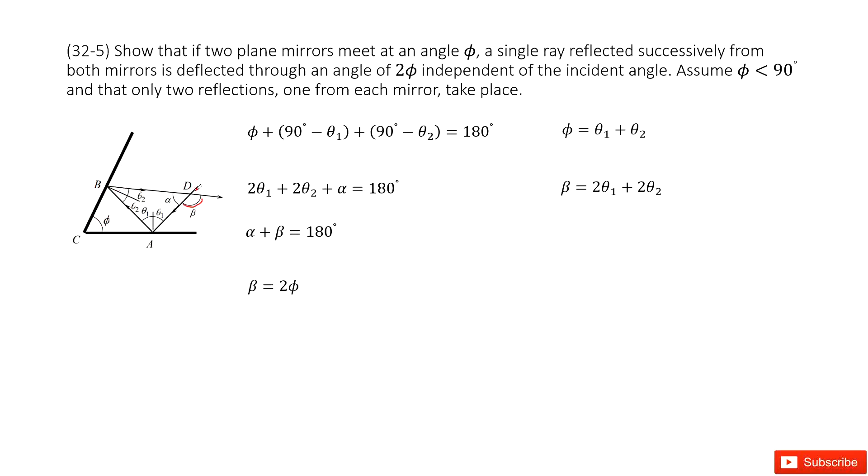Now we can see we have a light getting in from D. This is the incident wave, and it reflects. So we have theta 1 and theta 2. We can draw the vertical line here. This is theta 1, so this angle should be 90 degrees.